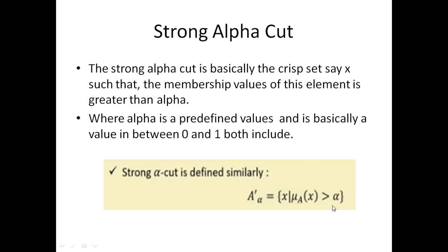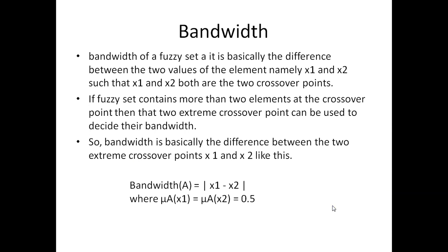We also have strong alpha cut, which is similar to alpha cut. The only difference is that in alpha cut the membership value is either greater than or equal to alpha, but in strong alpha cut only strictly greater than alpha will work — equal to alpha will not work. So the membership value of X should always be greater than alpha, not equal to.